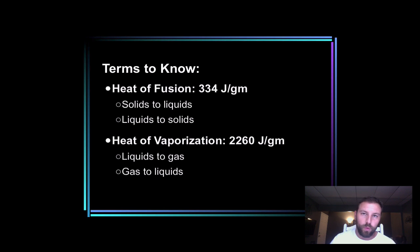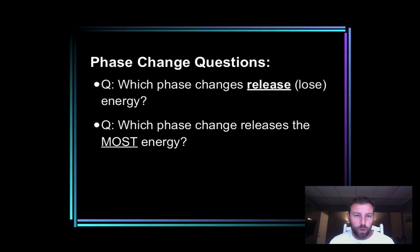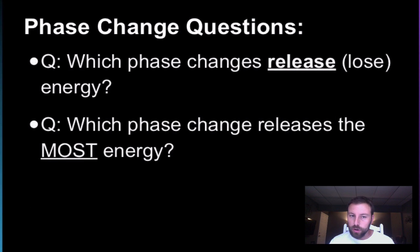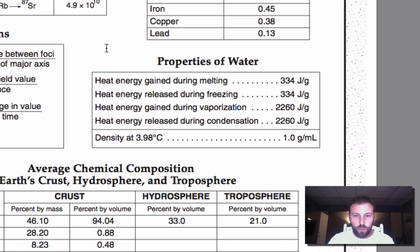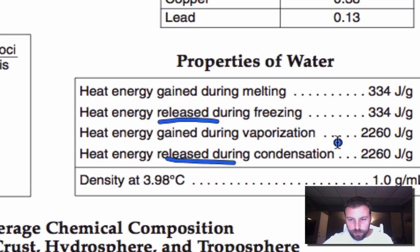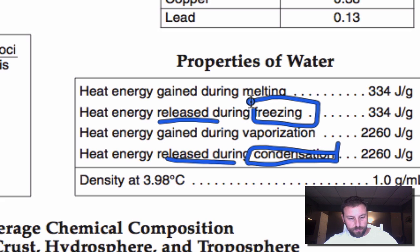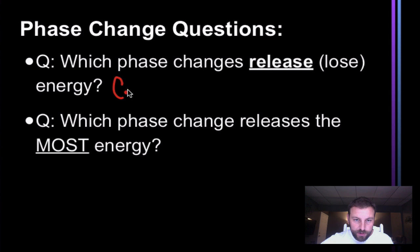A couple of terms to know. Heat of fusion, as we got from the cover of the reference table: 334 joules per gram. Heat of vaporization: 2,260 joules per gram. Notice it doesn't matter if you're adding or releasing energy. Here are some phase change questions. Which phase change releases or loses energy? For that, we can go to our reference table. We're looking for releasing or losing energy, and we go back to page one. We can see heat energy released and heat energy released — so that would be condensation or freezing.